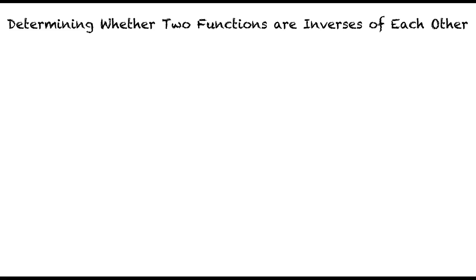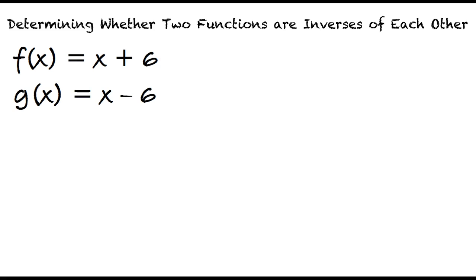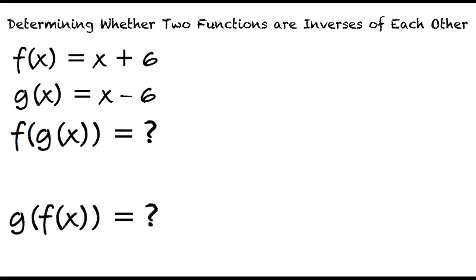If we are given f of x equals x plus 6 and g of x equals x minus 6, to find the composition of these functions — f of g of x or g of f of x — we must substitute one entire function for the variable in the other function. And if both of these compositions are equal to x, then the two functions are inverses of each other.